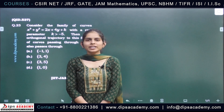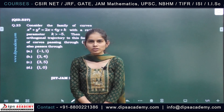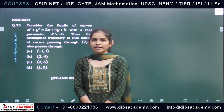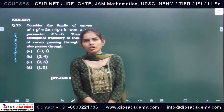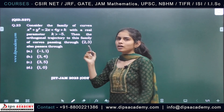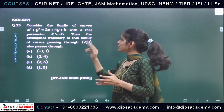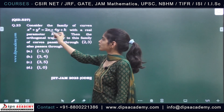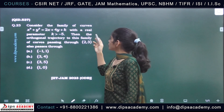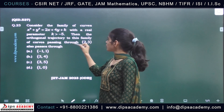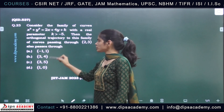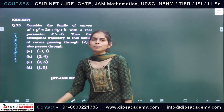Hi everyone. As we are discussing the JAM 2023 question series, today we will discuss a question from ordinary differential equations, specifically from the topic of orthogonal trajectories. The question asks us to find the orthogonal trajectory of the given family of curves: x² + y² = 2x + 4y + k, where k is a real parameter, passing through the point (2, 3), and we have to identify the correct point from the given options.